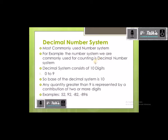The decimal number system consists of 10 digits, from 0 to 9. You can count them yourself — 0 to 9, that's 10 digits. Like in a calculator, or in a mobile calculator, or in a laptop or computer keyboard, you can see a number keypad that consists of 0 to 9 digits. Since it consists of 10 digits, the base of the decimal number system is 10.